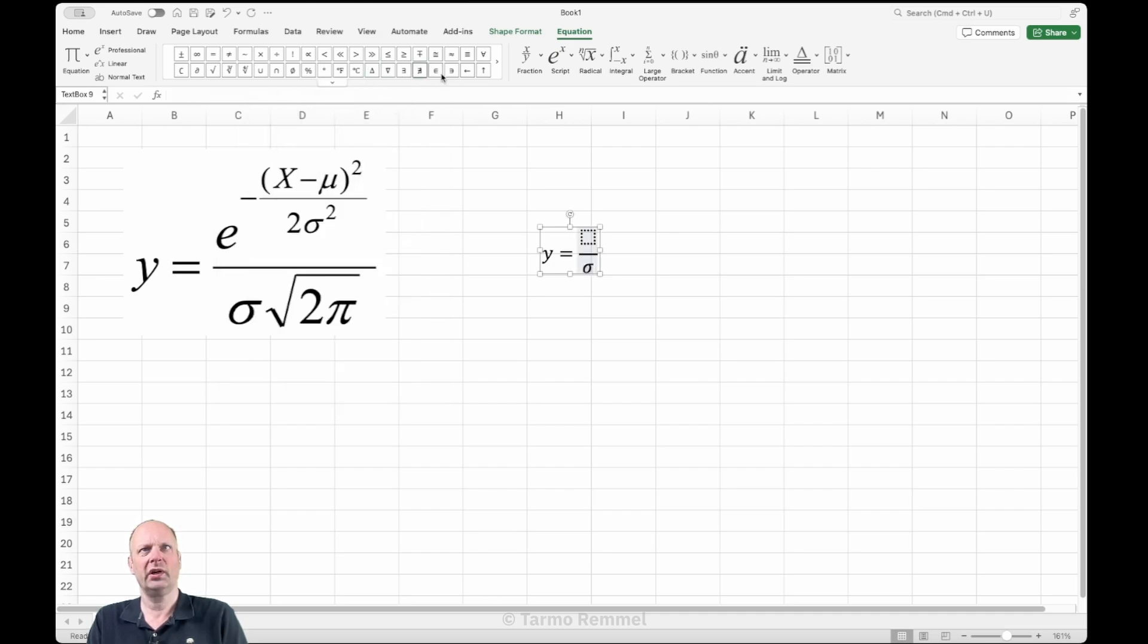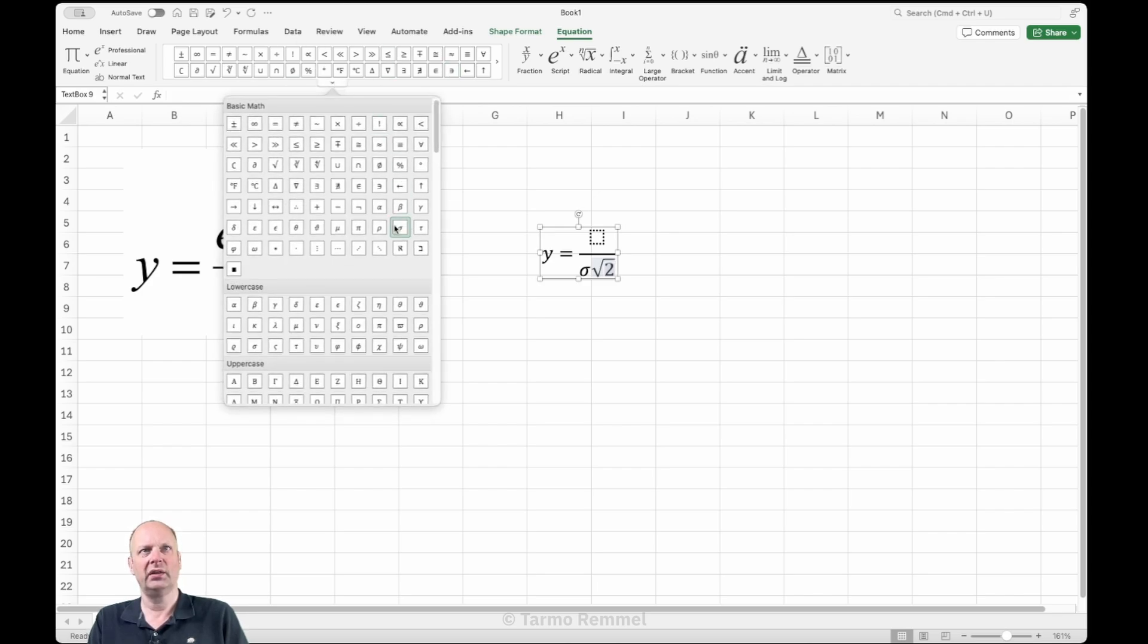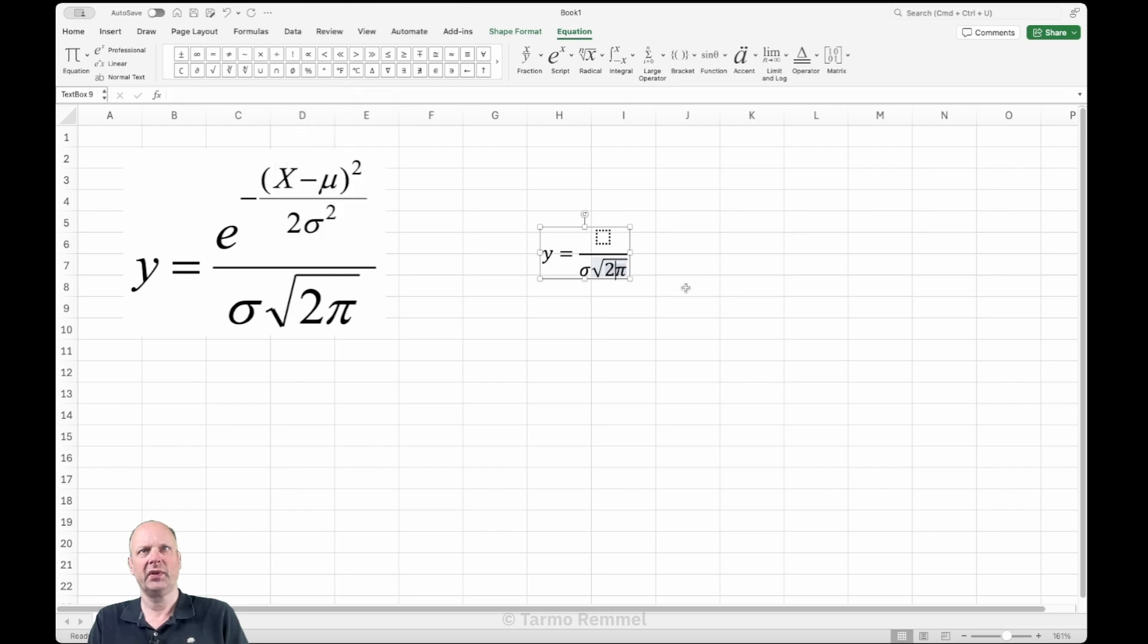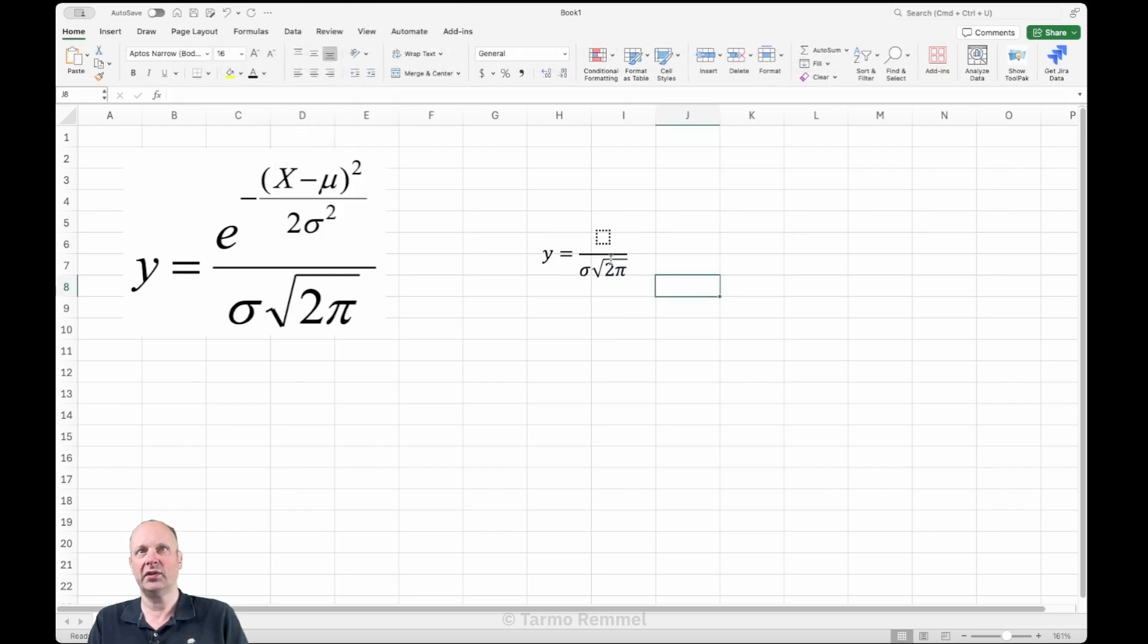And then we're going to head back over here to the radical options and we're going to select the square root symbol. Notice this is drawing the square root for us, put another dotted box inside that's waiting for content. We're going to select that box and type in 2 on the keyboard, and then we're going to go back over here to where we have our symbols and find the pi symbol. And just like that, we've got the denominator of our fraction completed.